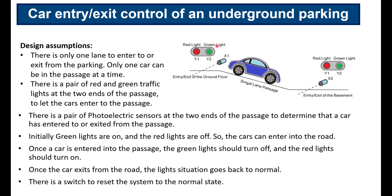There is a pair of red and green traffic lights — Y1, Y2 — at the two ends of the passage, indicating whether it's possible to enter. There is also a pair of photoelectric sensors at the two ends denoted by X1 and X2 — proximity sensors that detect whether anything is in front of them. Initially the green lights are on, meaning the passage is empty. Once a car enters the passage, the green light turns off and red turns on, and once the car exits the lights return to green. There is also a reset switch to return the system to normal state.